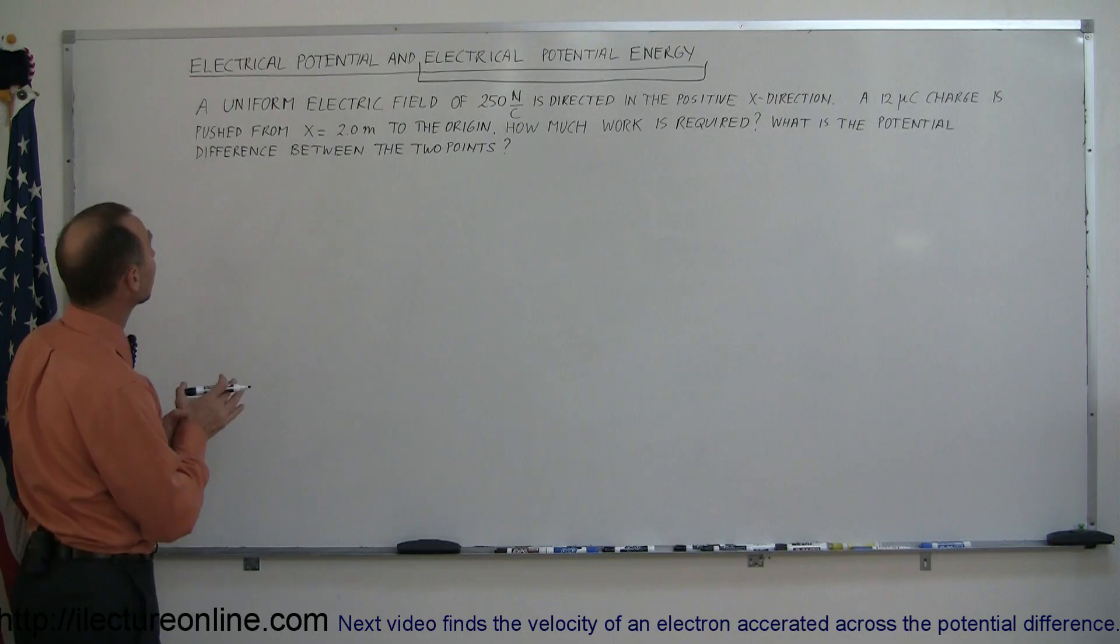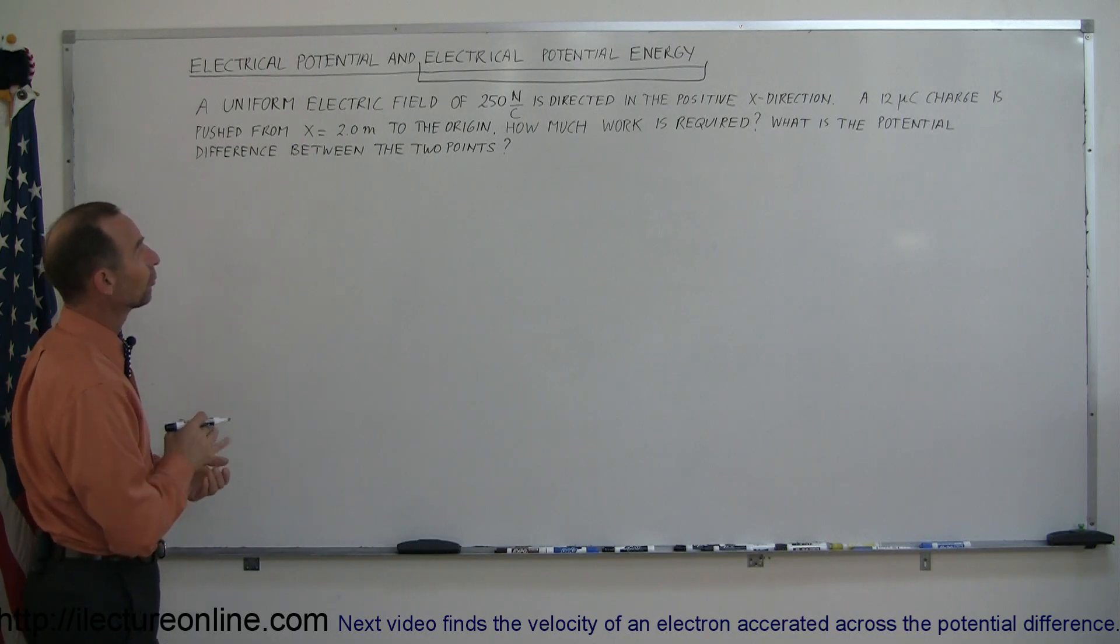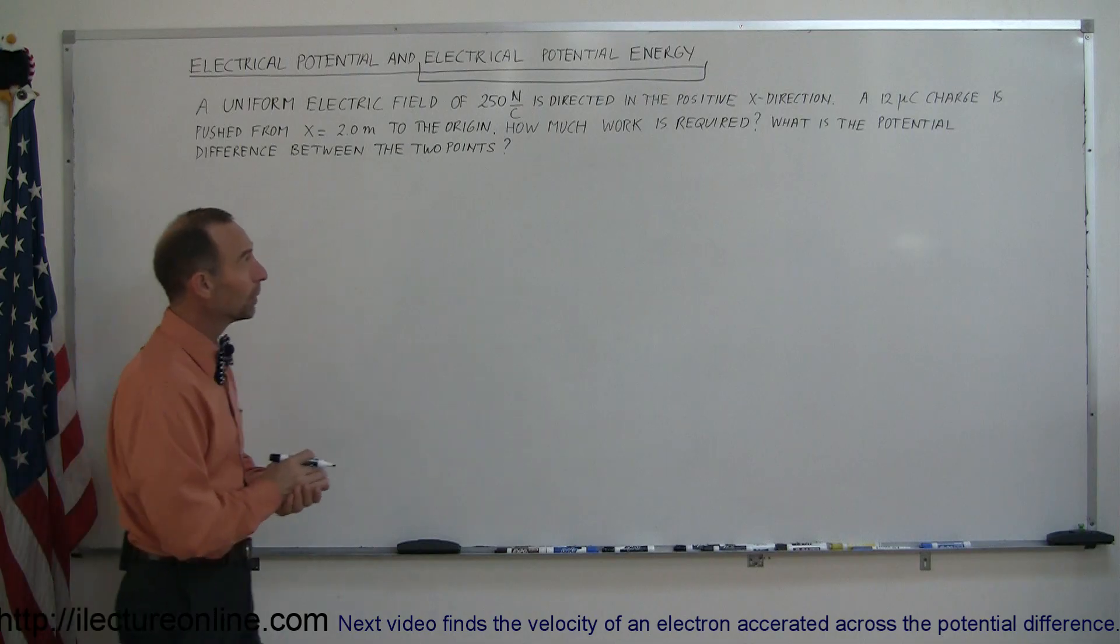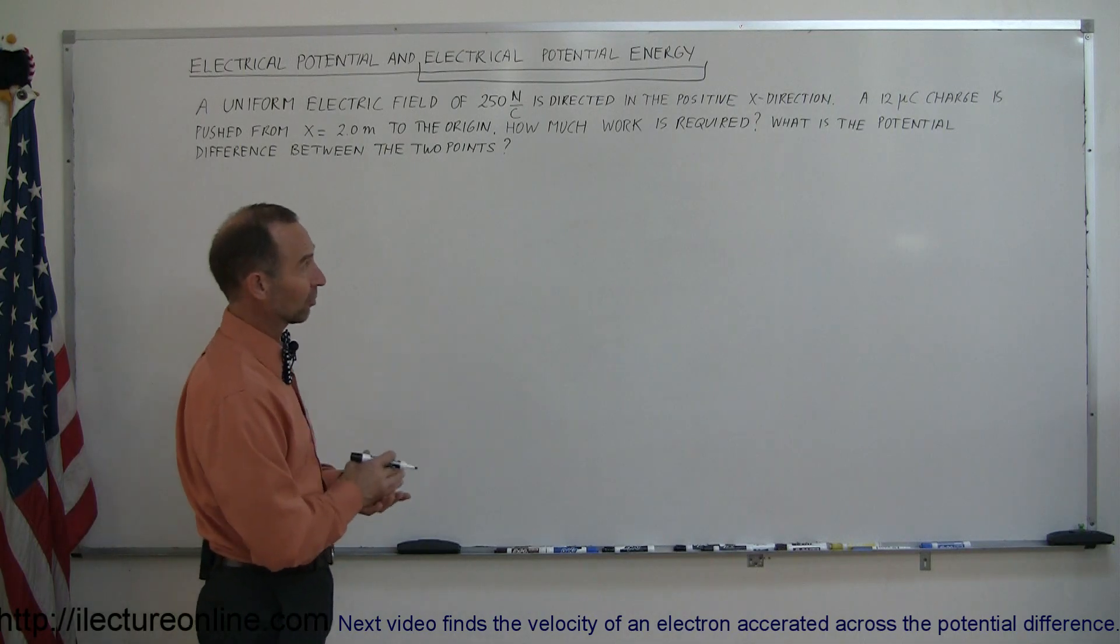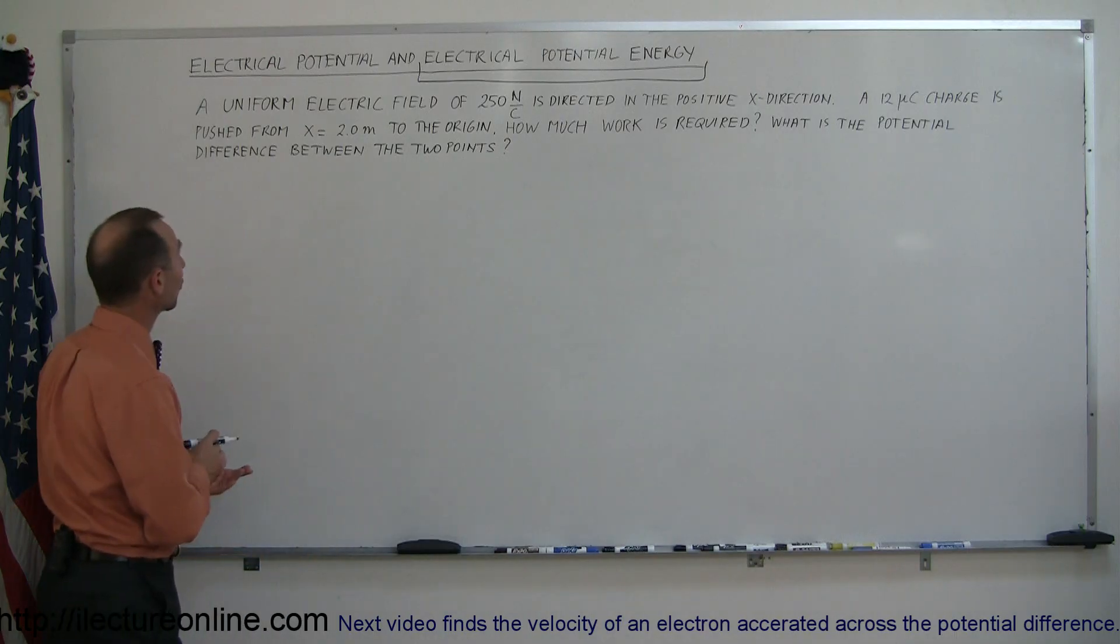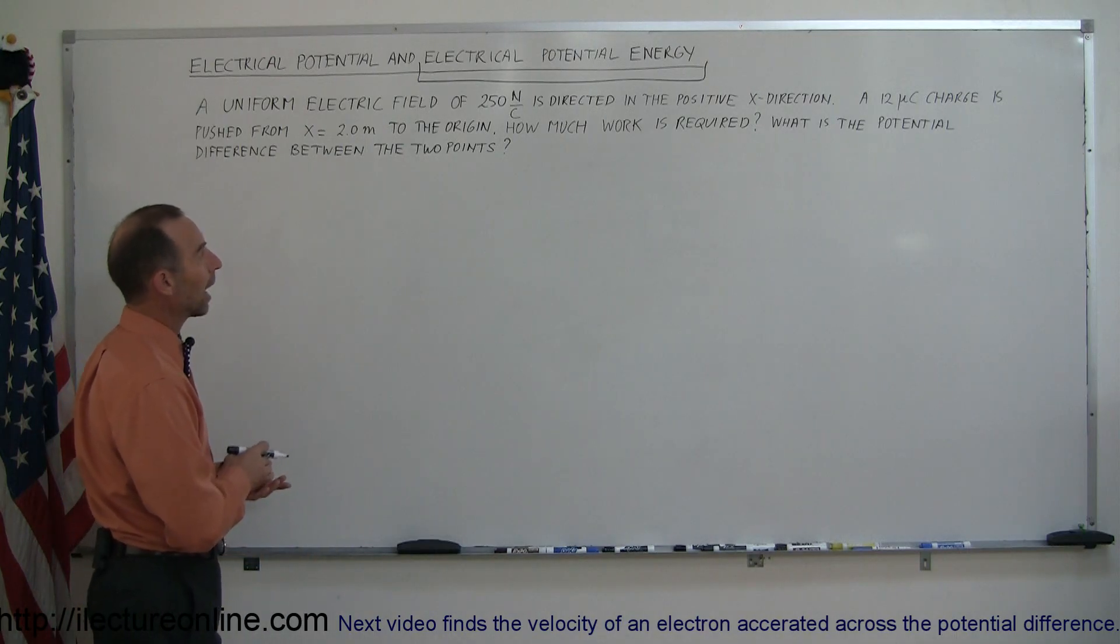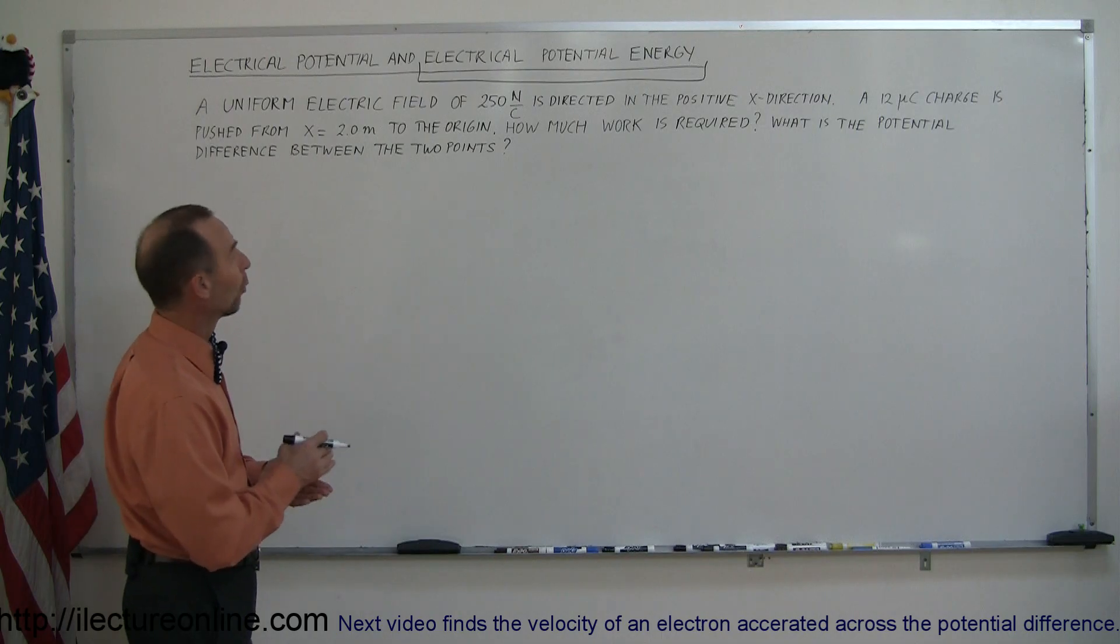So the problem we're looking at today is as follows. A uniform electric field of 250 newtons per coulomb is directed in the positive x direction. A 12 microcoulomb charge is pushed from x equals 2 meters to the origin. How much work is required? What is the potential difference between the two points?